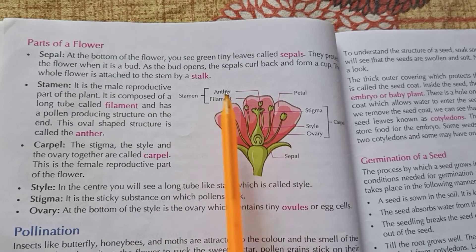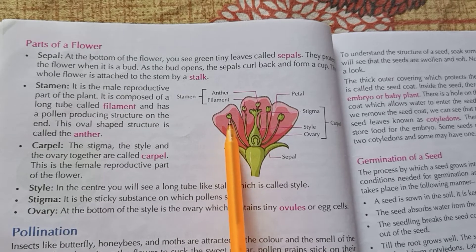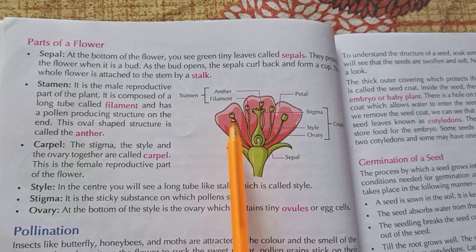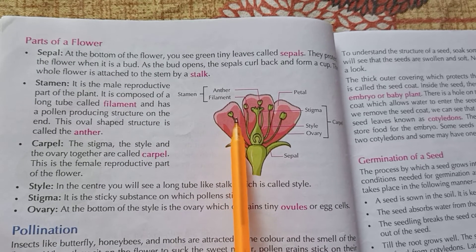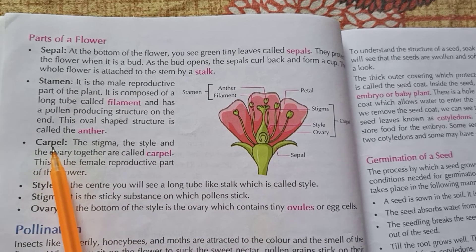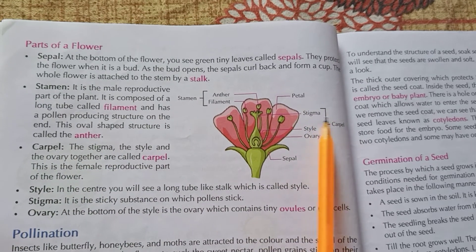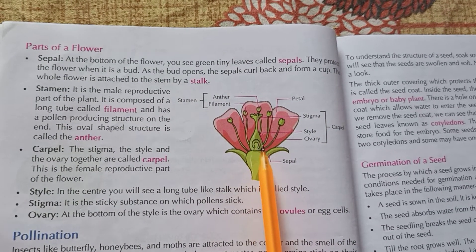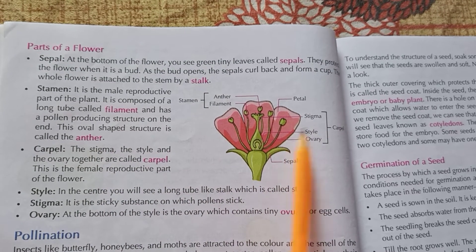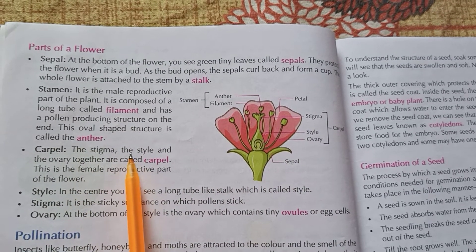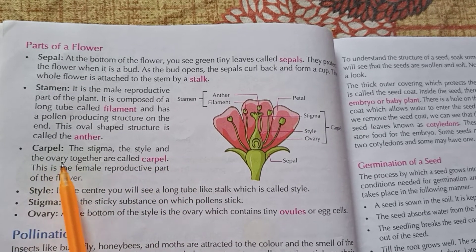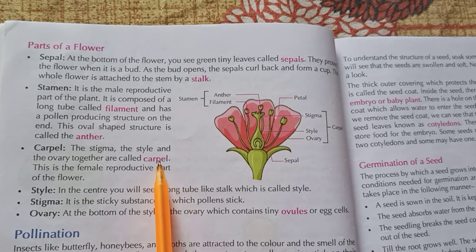This oval-shaped structure is called the anther. The filament and anther together make up the stamen. This is the whole carpel. Now these parts are also labeled — the stamen, the style, and the ovary together are called carpel.